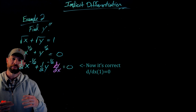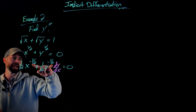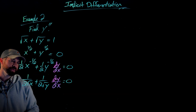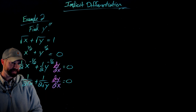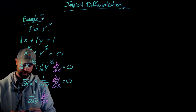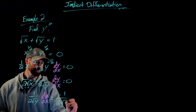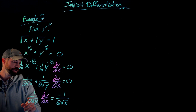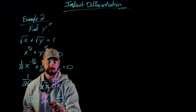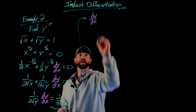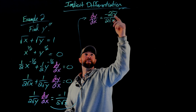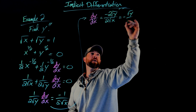Now I'm going to use some algebra to solve for dy/dx. I'll rewrite these negative exponents as square roots — the negative part brings them down to the denominator. Subtracting over the x term and isolating dy/dx, I get: 1 over 2√y times dy/dx equals negative 1 over 2√x. Multiplying both sides by 2√y, the result is negative 2√y over 2√x, and canceling the twos gives dy/dx equals negative √y over √x.